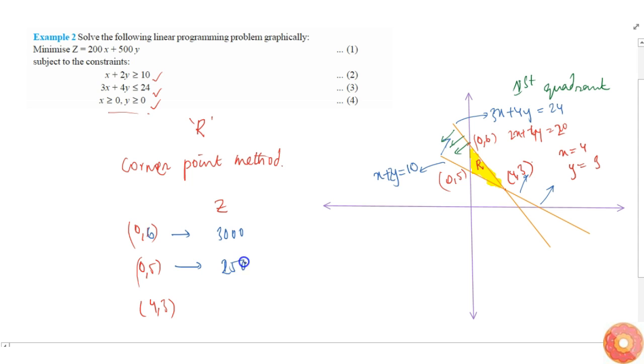At this point (4,3), it is 4 times 200, which is 800, plus 1500, equals 2300. As you can see, the value is minimum at (4,3). Therefore, Z is minimum at (4,3) with minimum value of 2300.